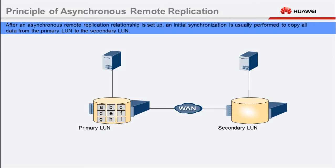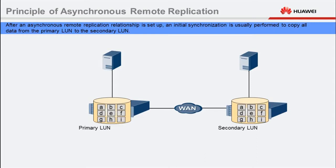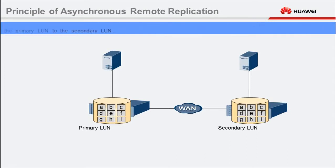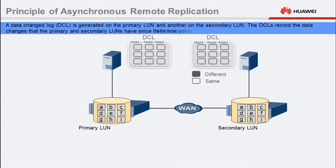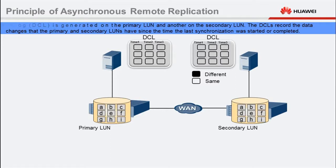After an asynchronous remote replication relationship is set up, an initial synchronization is usually performed to copy all data from the primary LUN to the secondary LUN. A data changed log, DCL, is generated on the primary LUN and another on the secondary LUN. The DCLs record the data changes that the primary and secondary LUNs have since the time the last synchronization was started or completed. When data is written to a storage system, a node is added to the corresponding DCL.